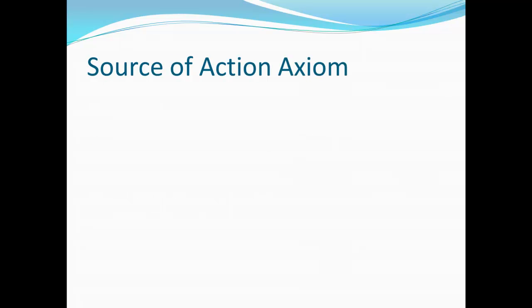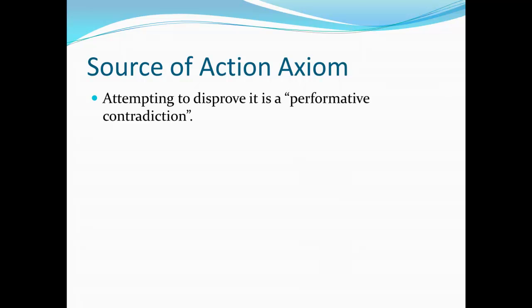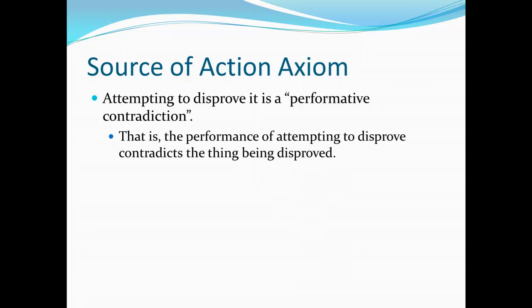The source of the action axiom is something we can really rely on — it must be true, something that we cannot even argue against. The reason we know that is that any attempt to disprove the action axiom is, in fact, a performative contradiction. A performative contradiction is something where the performance of attempting to disprove it contradicts the thing that is trying to be disproved.